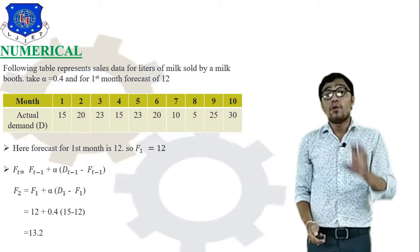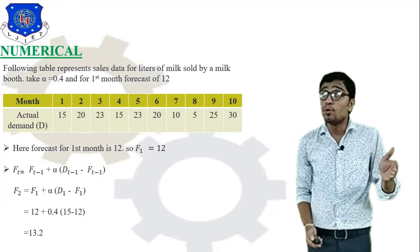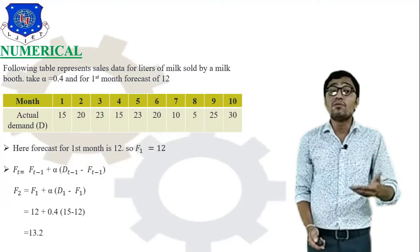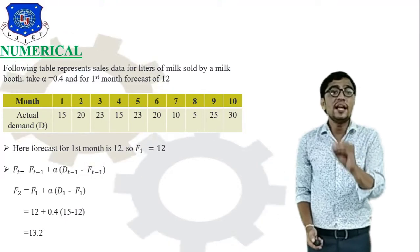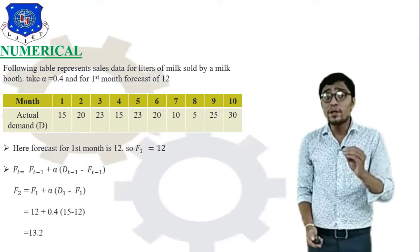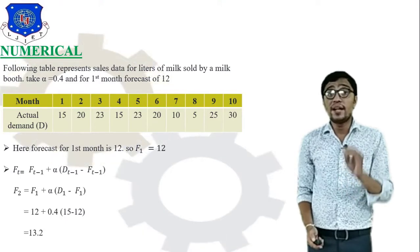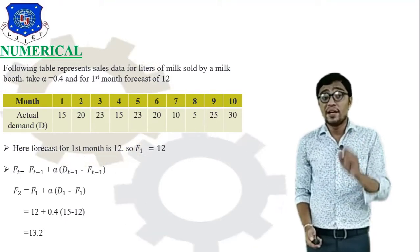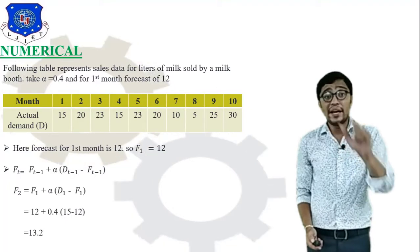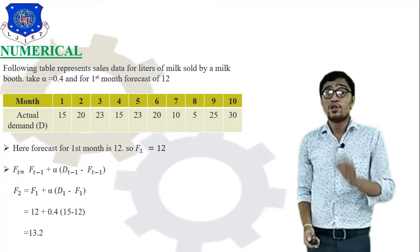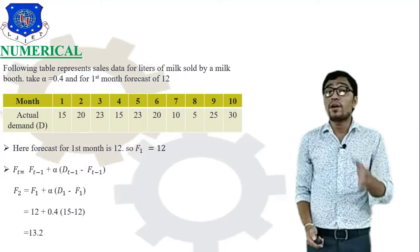Since F1 is already given, we need to find F2 through F10. To find F2: F2 = F1 + α × (D1 − F1). F1 is 12, α is 0.4, and D1 is 15. So F2 = 12 + 0.4 × (15 − 12) = 13.2. In this way we calculate the forecast for the second month.